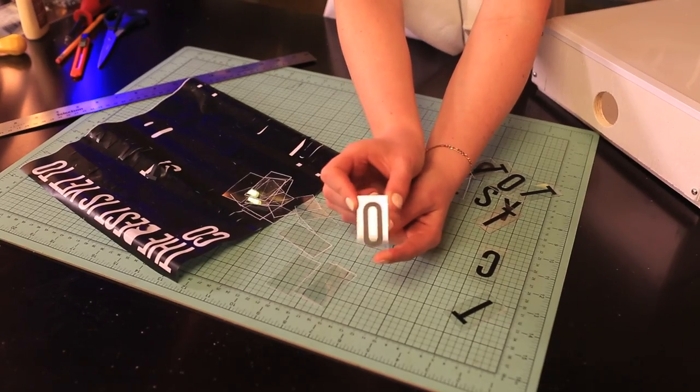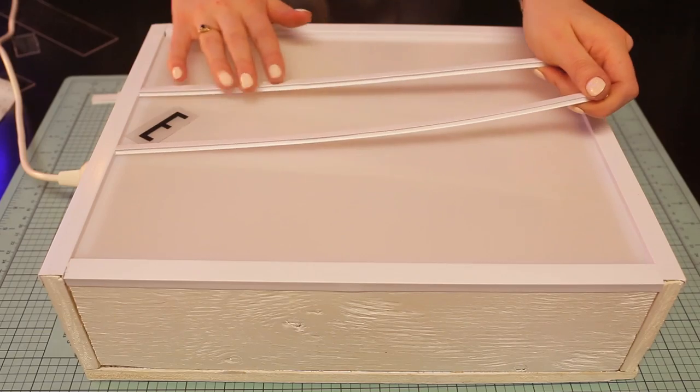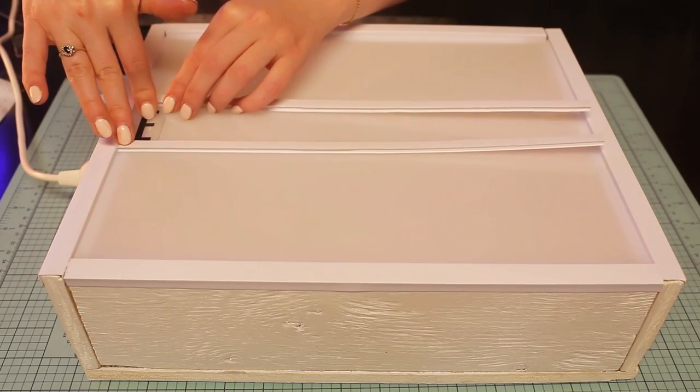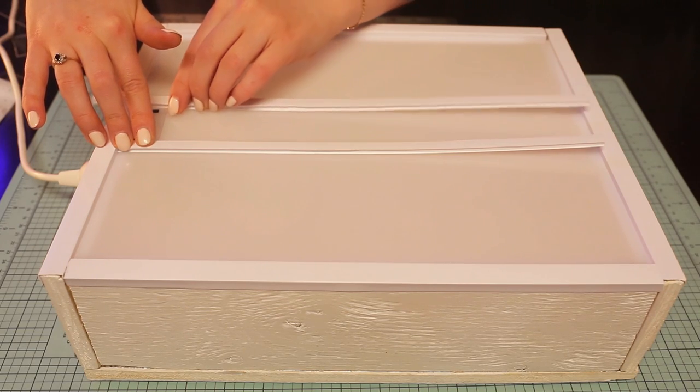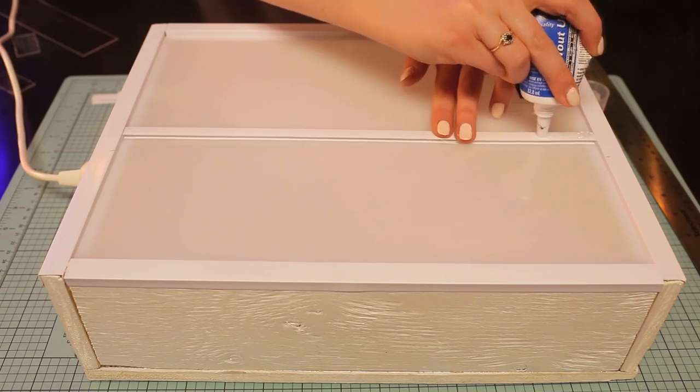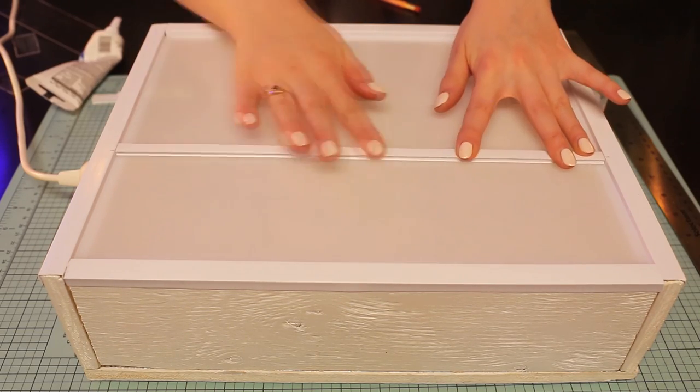Once you have all of your letters cut out, we can finish adding on the corrugated ledges. Place one letter between two of the middle ledges and then push them together to make sure you're placing them in the right spot. Mark the spot with a pencil and then glue them into place using the same glass glue we used earlier.